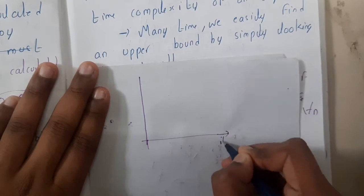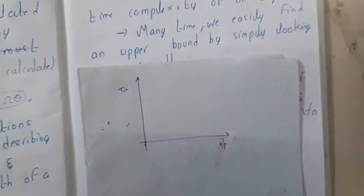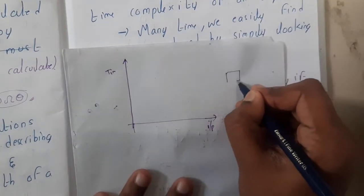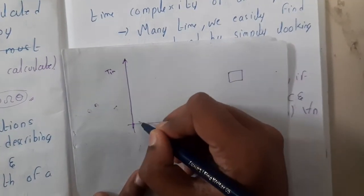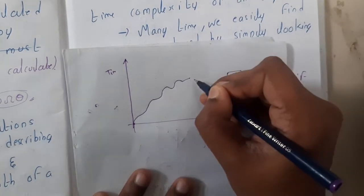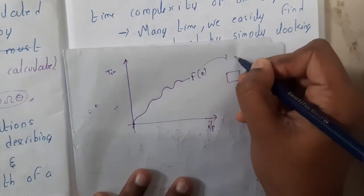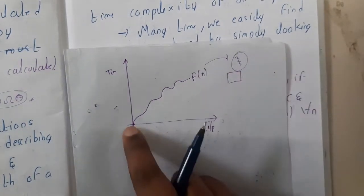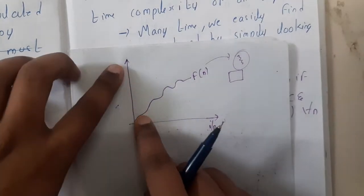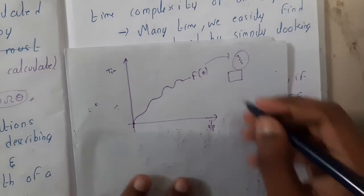Assume that the x-axis is your input size and the y-axis is the time. Assume you wrote a block of code or designed an algorithm — it takes time based on input. This is your function f(n), and as the input size increases, the time also increases.